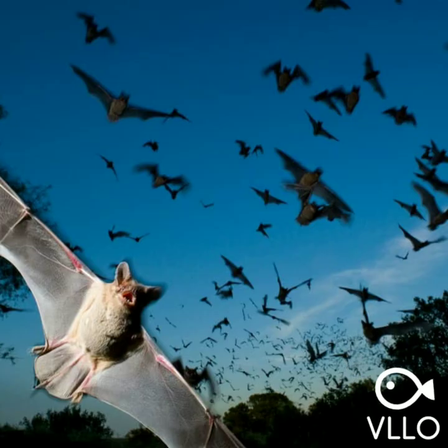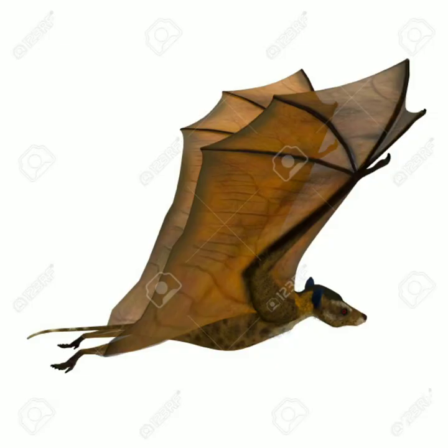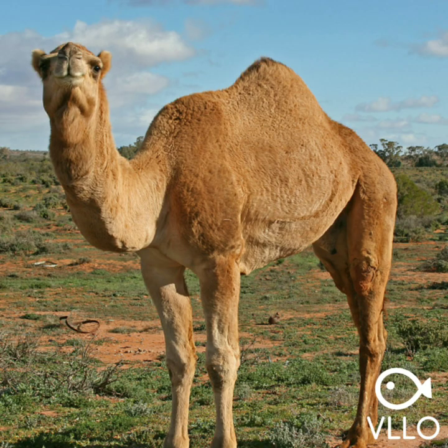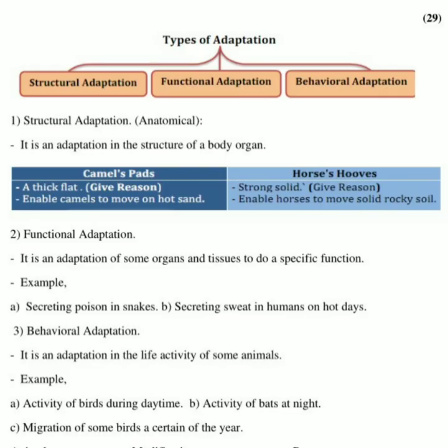Reasons for adaptation are: to get food, to escape from enemies, or as a way of motion such as flying, swimming, walking, or running. From this we conclude that there are three types of adaptation: structural, functional, and behavioral.